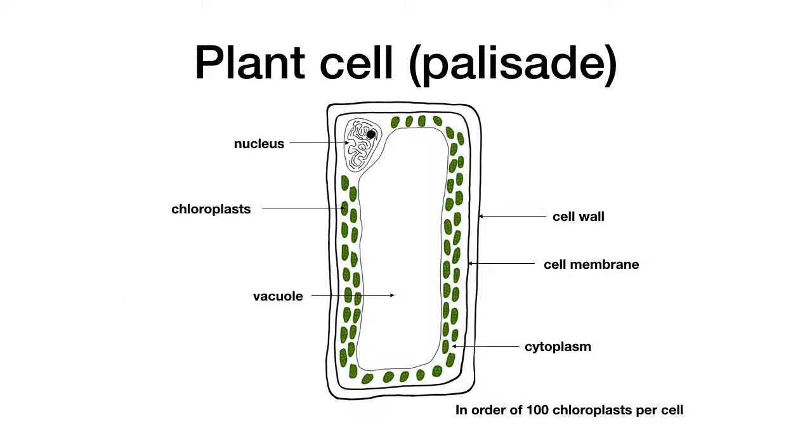Here we show you a closer look at a palisade cell. The plant cells have similarities with other cell types, for example mammalian cells. They have a nucleus, a cytoplasm and a cell membrane, but also have some distinct structures.